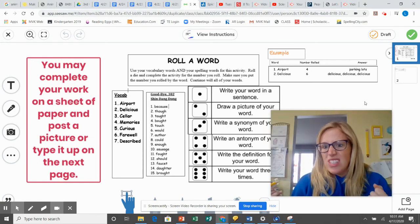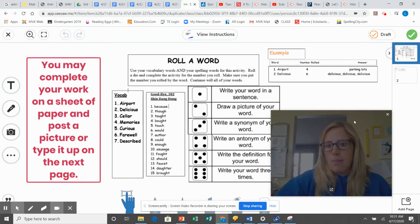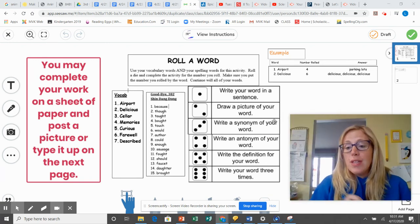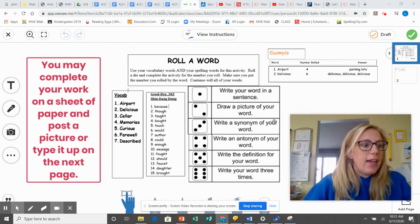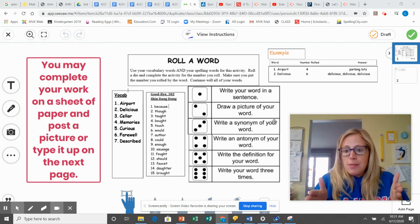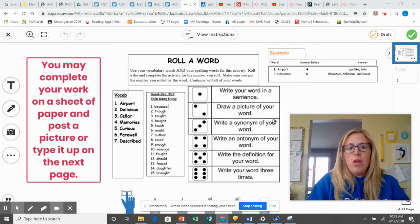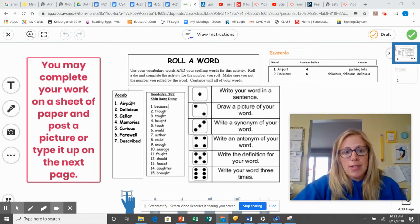Get a pencil in your hand. Sometimes it's just easier than typing it up. So you need a dice. If you don't have a dice, then you need to have six little sheets of paper with the numbers on them, and you can just pick one as you go. So we're going to do this with all of our words. There's 22 total because we have the vocab words and we have the spelling words.